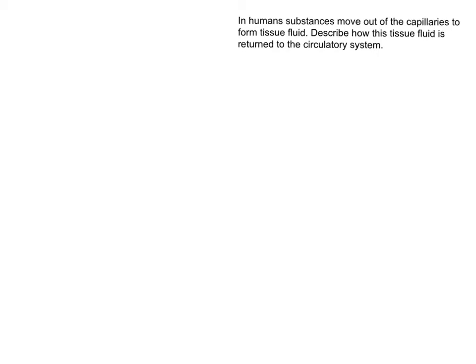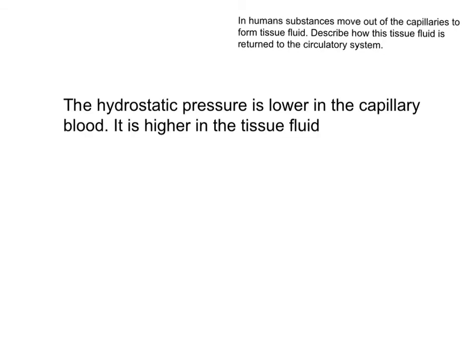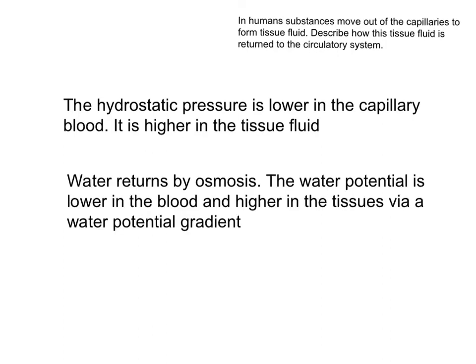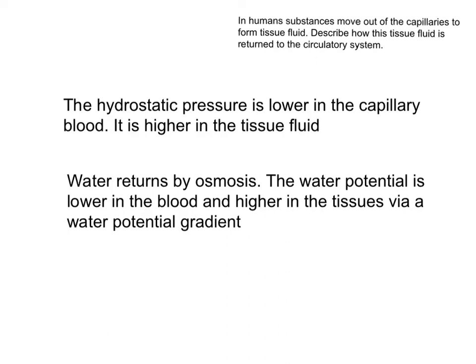There was some confusion by weaker candidates about the effects of protein on the water potential inside blood capillaries. Many candidates did refer to osmosis, but not always in the correct context. For the first mark, the hydrostatic pressure is lower in the capillary or blood and is higher in the tissues or the tissue fluid — it must be a comparison. The part of the word 'er' is underlined, meaning you need to use comparative terms like 'lower' and 'higher.' Water therefore returns by osmosis. The water potential is lower in the blood and higher in the tissues, creating a water potential gradient. This is caused by the protein in the blood, and fluid returns via the lymph.